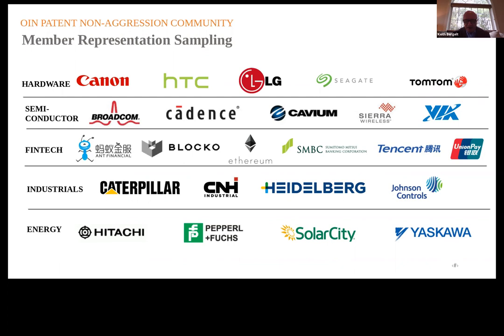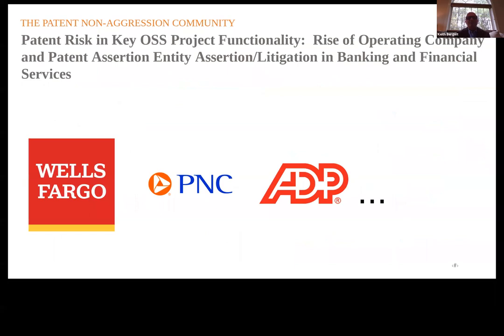Ant Financial, a spin-out of Alibaba, will be going public in the near future. Ant is also the largest micro-lender in the world, which is very significant because they are distributing capital to many countries in Africa and India where traditional banking systems will not serve micro-lending needs. Ant is being a trailblazer in this important area to ensure that capital is available to support entrepreneurship in many different parts of the world that are typically unserved in terms of capital needs.